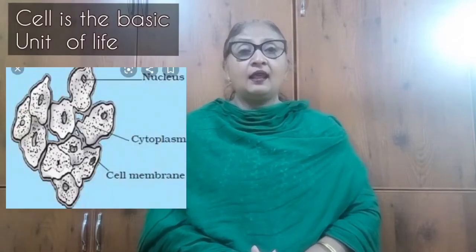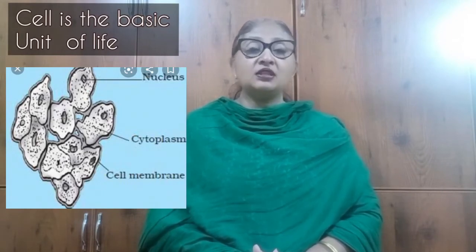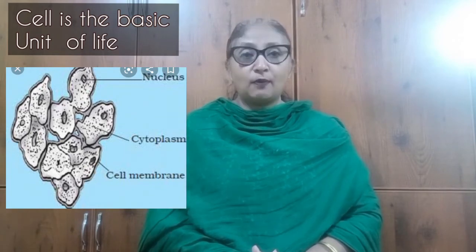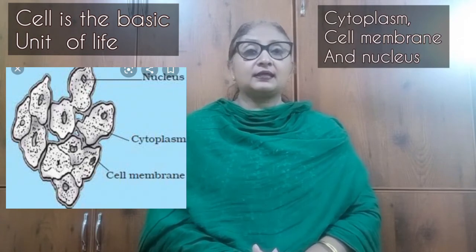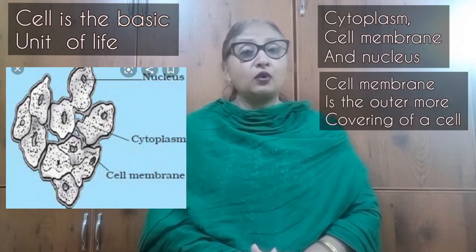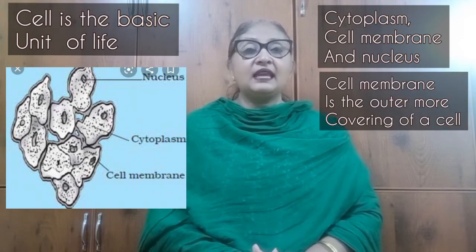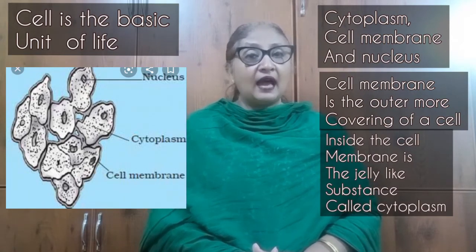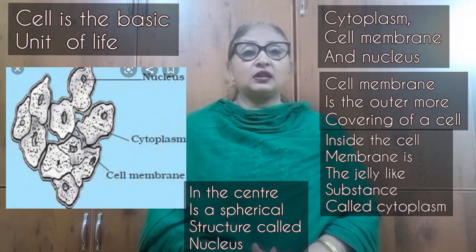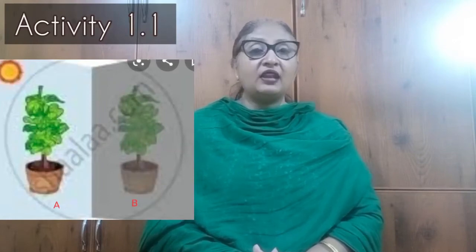Now, what is a cell? Cell is the basic unit of life. The three important components of a cell are: cytoplasm, cell membrane, and nucleus. The cell membrane is the outermost covering of a cell. Within the cell membrane is present the jelly-like substance called cytoplasm, and in the center is a spherical structure known as the nucleus.